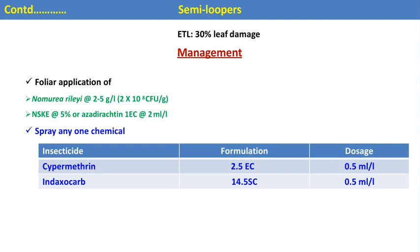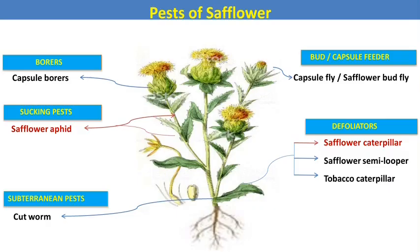For management of the semilooper, we can spray the crop with Nomuraea, an effective entomopathogenic fungus. Neem seed kernel extract and azadirachtin are botanical insecticides used against all types of insects. Cypermethrin and indoxacarb are the two recommended chemical insecticides against the semilooper.